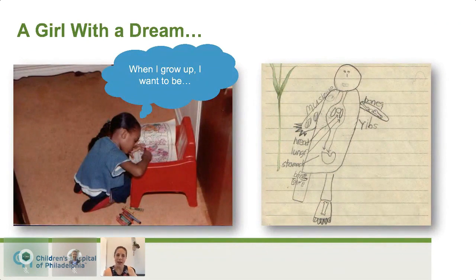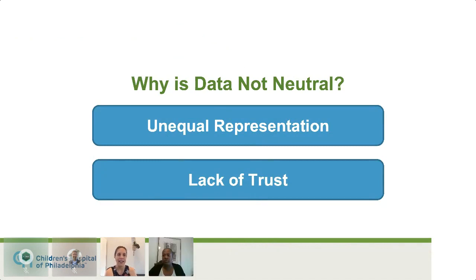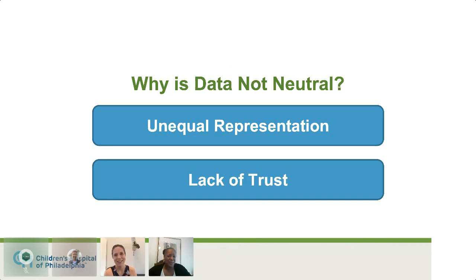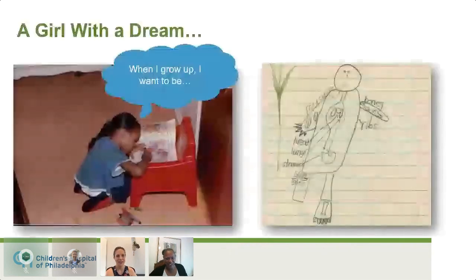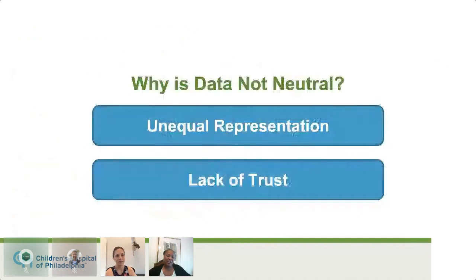Paulette and I want to share with you a little bit about why data is not neutral. There is sometimes an expectation that our data is somehow more pure and more representative of science than we are — that data is neutral. But data is not neutral. We're going to talk about two aspects. I want to talk about two out of the many reasons we could cover why data is not neutral.